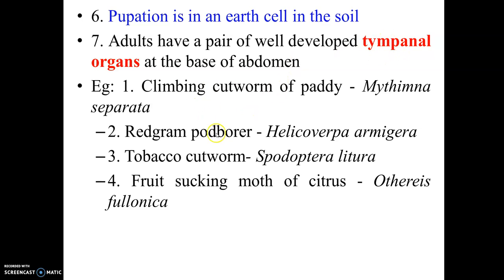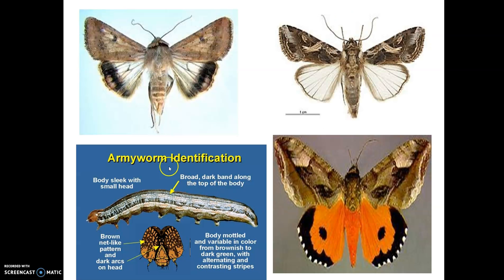Important examples include climbing cut worm of paddy, red gram pod borer, tobacco cut worm, and fruit sucking moth of citrus. The adult is the fruit sucking moth, which is a harmful insect. You can see the wings with cryptic coloration in adults, and a typical larva, along with the fruit sucking moth.